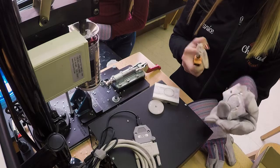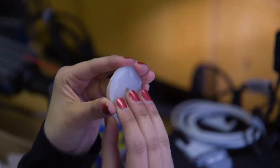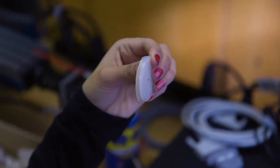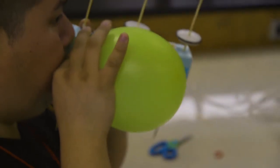The requirement is that they have to make the wheels using the injection molding machine. Each wheel requires two pieces and they have to use one single balloon as the power source to make their cars go.